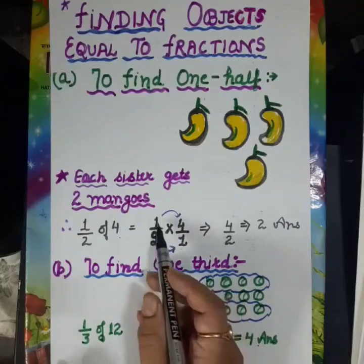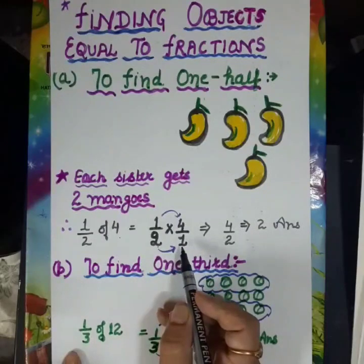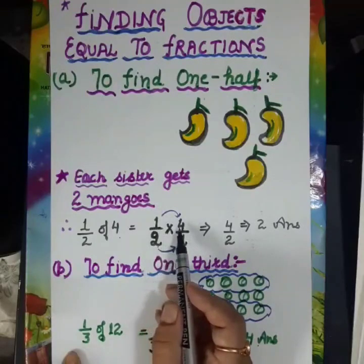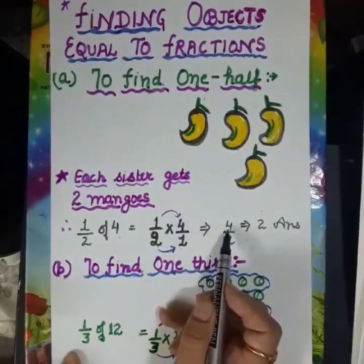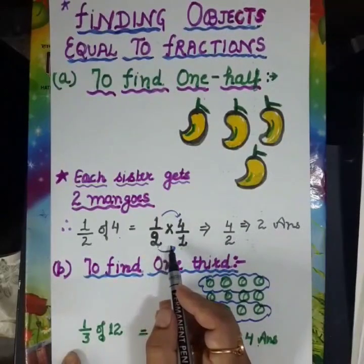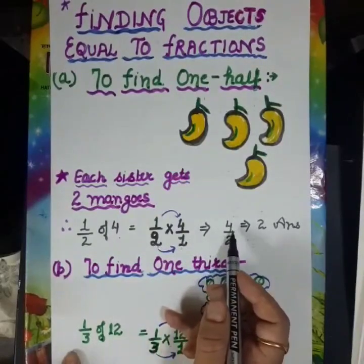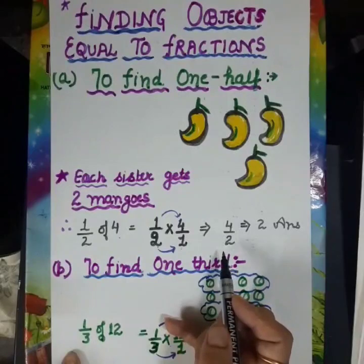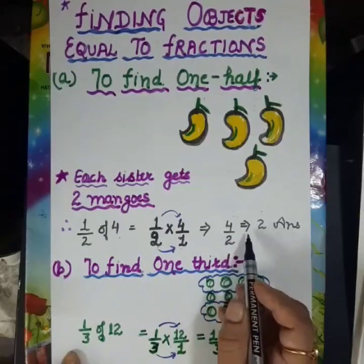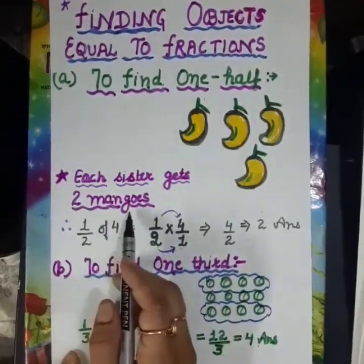Now, multiply numerator by numerator and denominator by denominator. When we multiply numerator by numerator, we will get 1 multiplied by 4 equal to 4. And when we multiply denominator by denominator, we will get 2 multiplied by 1 equal to 2. We will get 4 divided by 2, which gives us the answer 2. So each sister gets 2 mangoes.